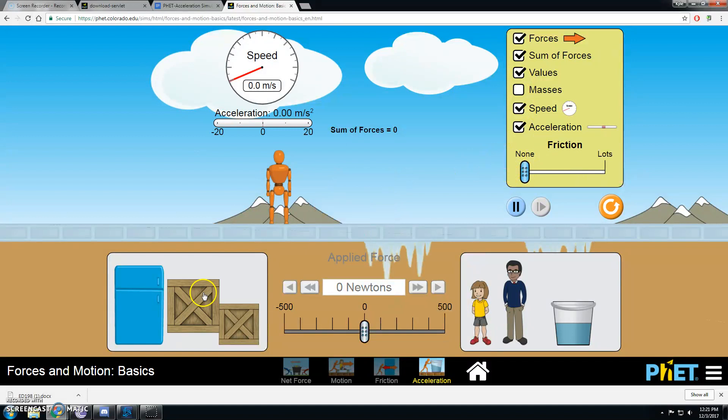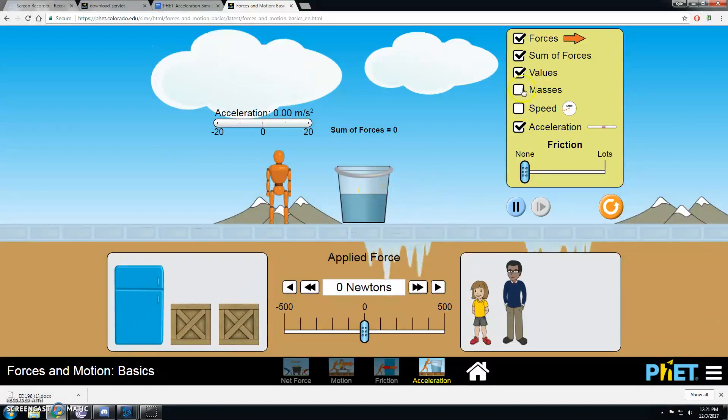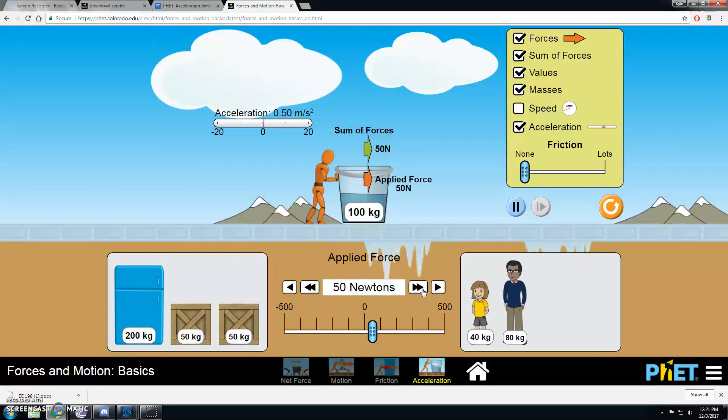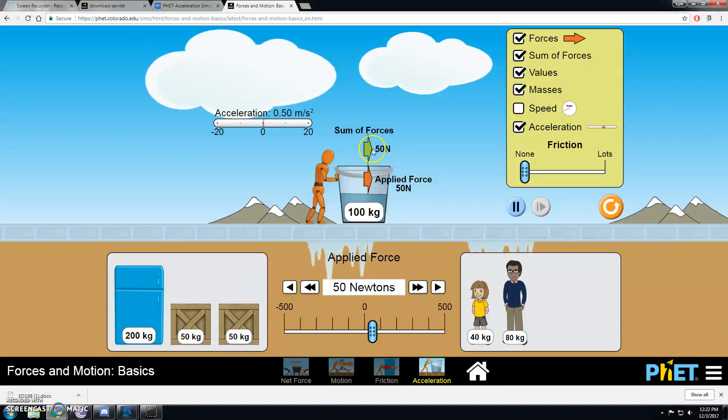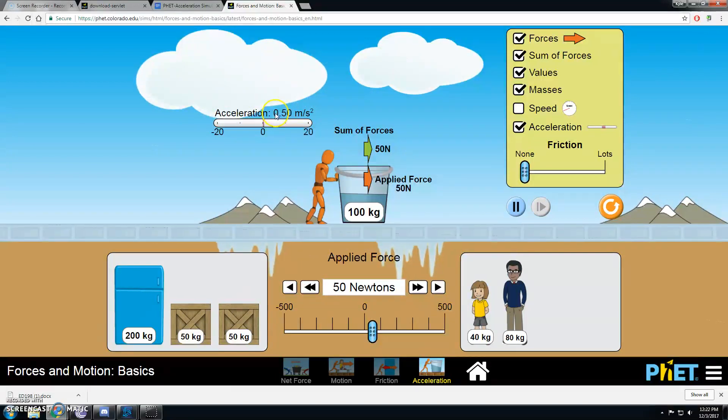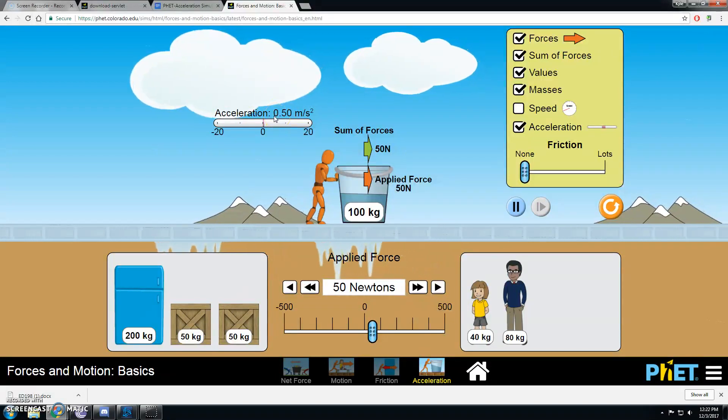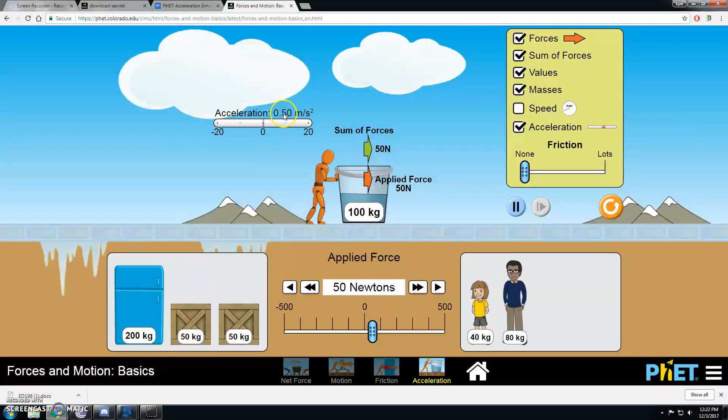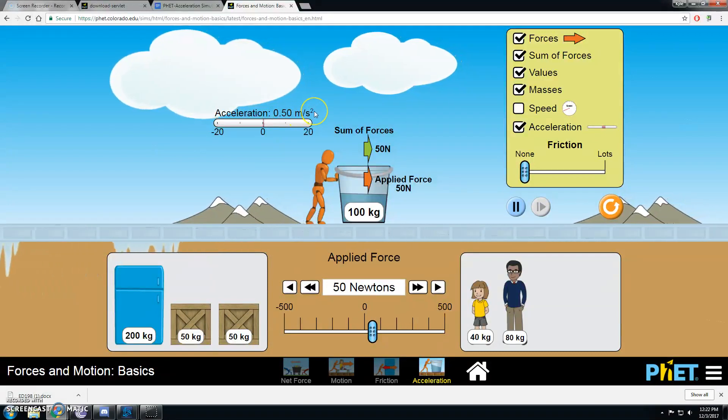So here we go. I've got my bucket of water. I've got all of the correct boxes checked off. So now what I'm going to do is apply a force of 50 newtons to my bucket of water. You can see that I'm applying this force, and right here in the acceleration meter, we have an acceleration reading of 0.5 meters per second squared.